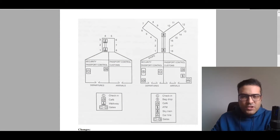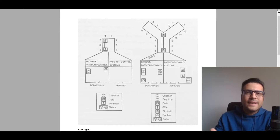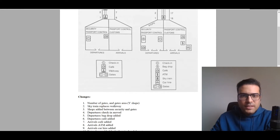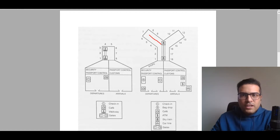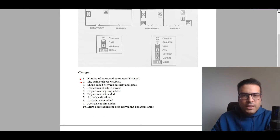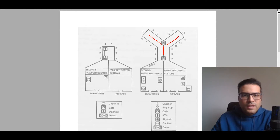Let's compare these two airports — you can pause the video to identify the changes. If we look at the two airports, we can see clear differences. The main one is the number of gates: the number of gates will increase and we have a new Y-shaped area. Another change is that the SkyTrain will replace the walkway, so instead of the walkway, we will have a new SkyTrain.